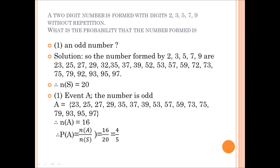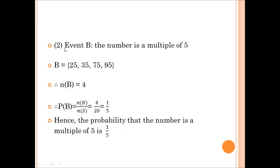Event A is that the numbers are odd numbers. The odd numbers from the list are: 23, 25, 27, 29, 35, 37, 39, 53, 57, 59, 73, 75, 79, 93, 95, 97. So the number of event A is 16. Therefore, P(A) = 16/20 = 4/5.